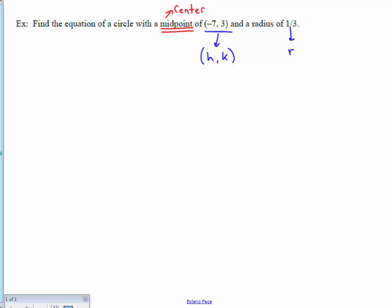Go back to your standard form of equation of a circle: X minus H squared plus Y minus K squared equals R squared. What we would like to do from here is plug in the values that we know.